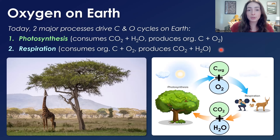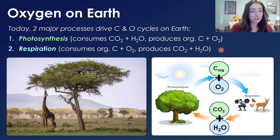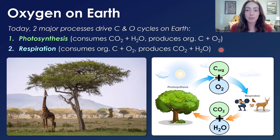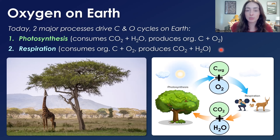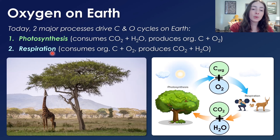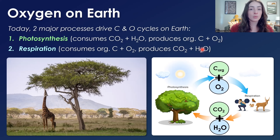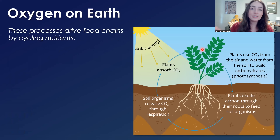On Earth today, two major processes drive the carbon and oxygen cycles. Photosynthesis, obviously, consumes CO2 and water and produces organic carbon — biomass, their bodies — and oxygen, which goes into the atmosphere or the oceans. Then animals and other respiring organisms carry out oxygen respiration, where we consume organic carbon and oxygen and produce CO2 and water. This cycles nutrients and drives food chains on Earth.